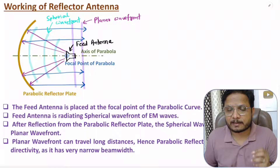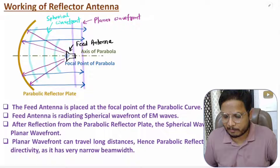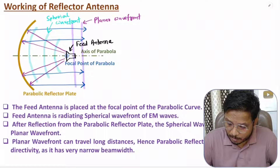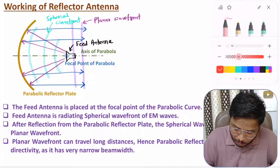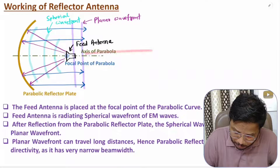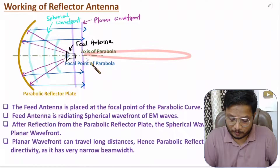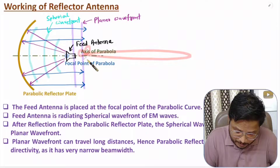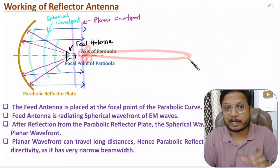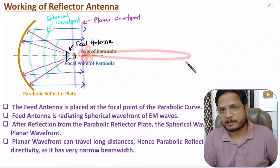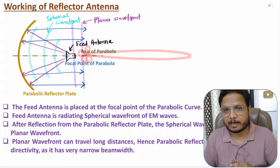If you observe the radiation characteristics, it has an extremely narrow major lobe with small minor lobes. Because this beam is very narrow, one can use it for long distance communication.